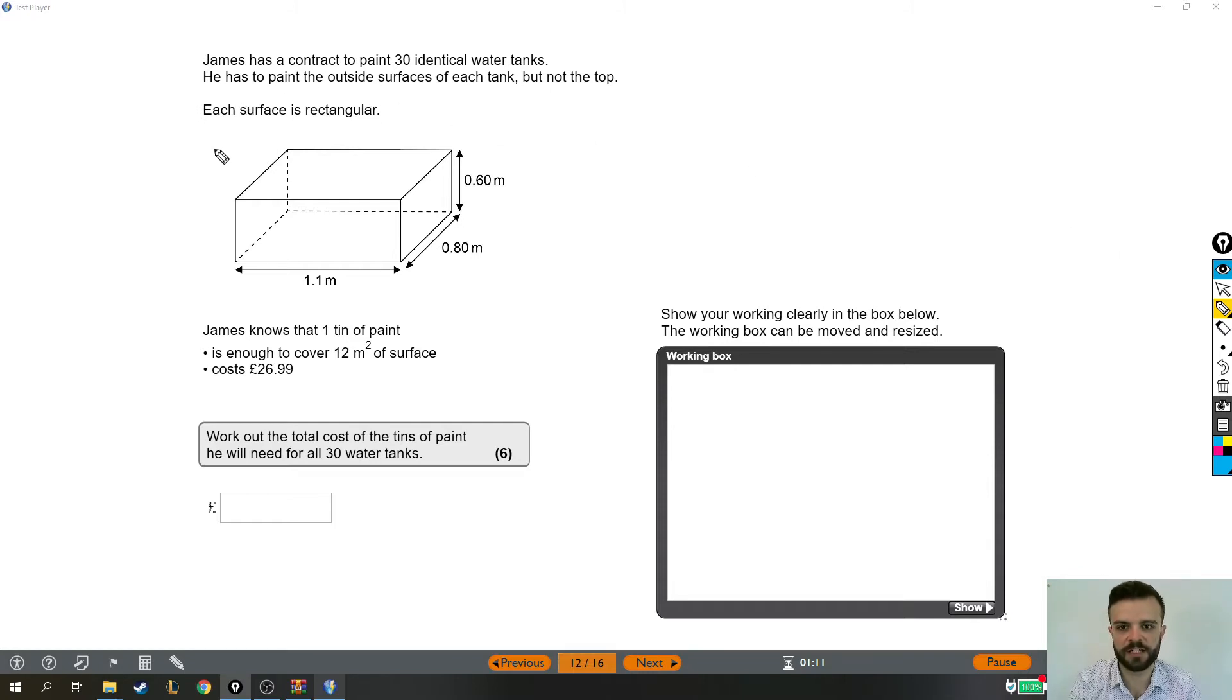James has a contract to paint 30 identical water tanks. He has to paint the outside surfaces of each tank, but not the top. Each surface is rectangular, and here is what the tank looks like. James knows that one tin of paint is enough to cover 12 meters squared of surface and it costs £26.99. Work out the total cost of the tins of paint he will need for all 30 water tanks.